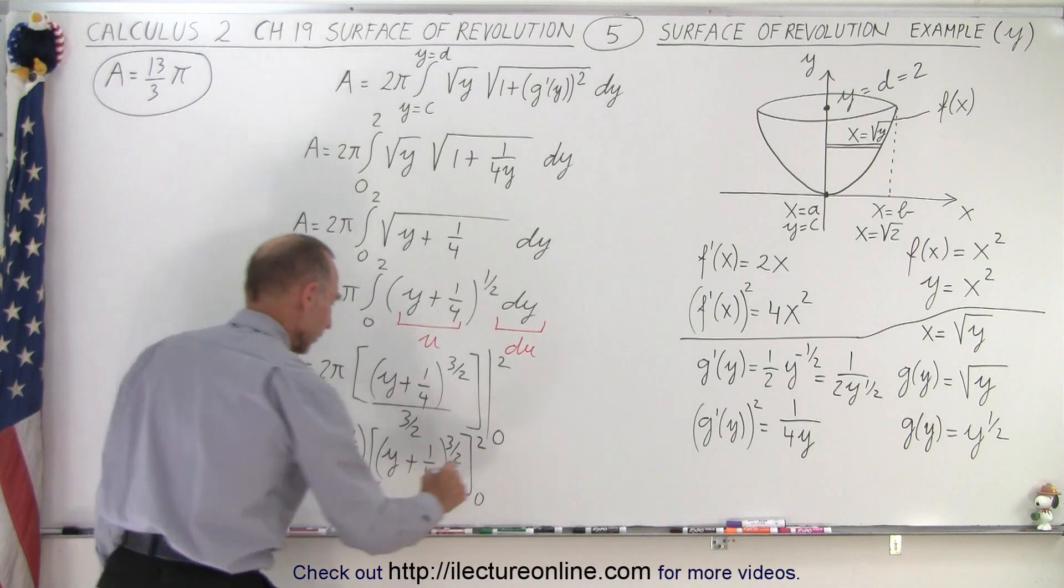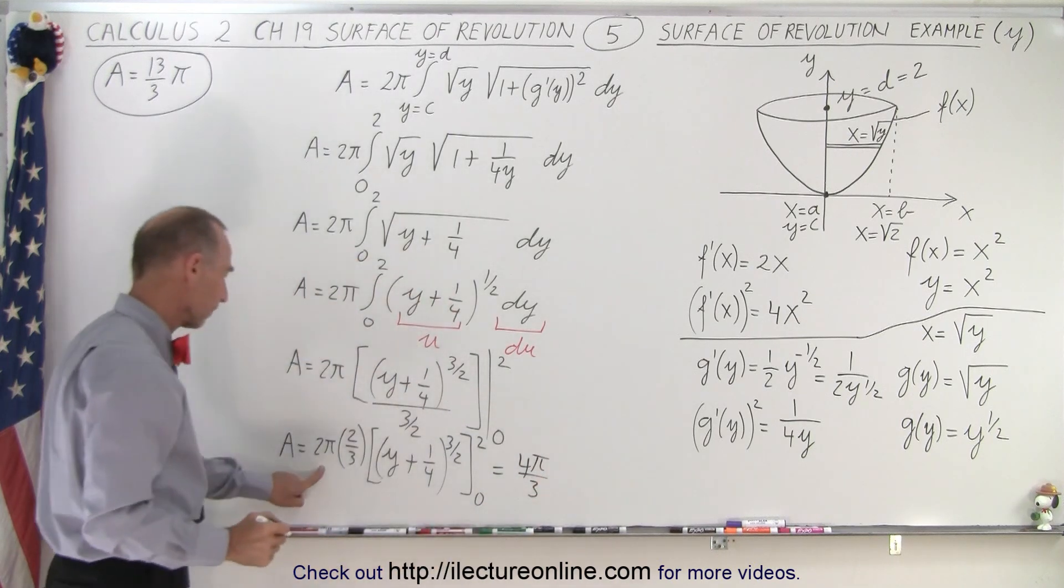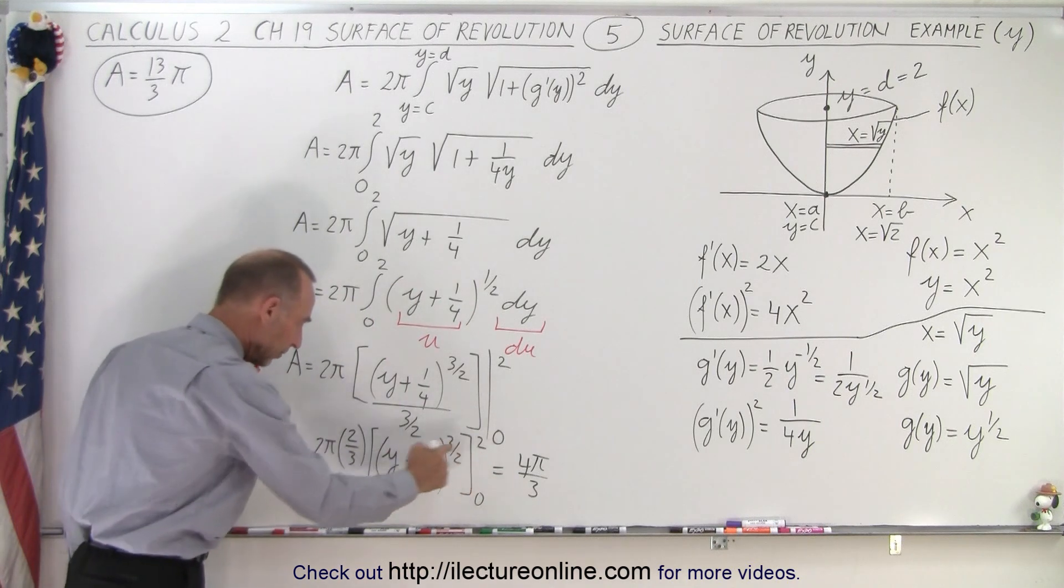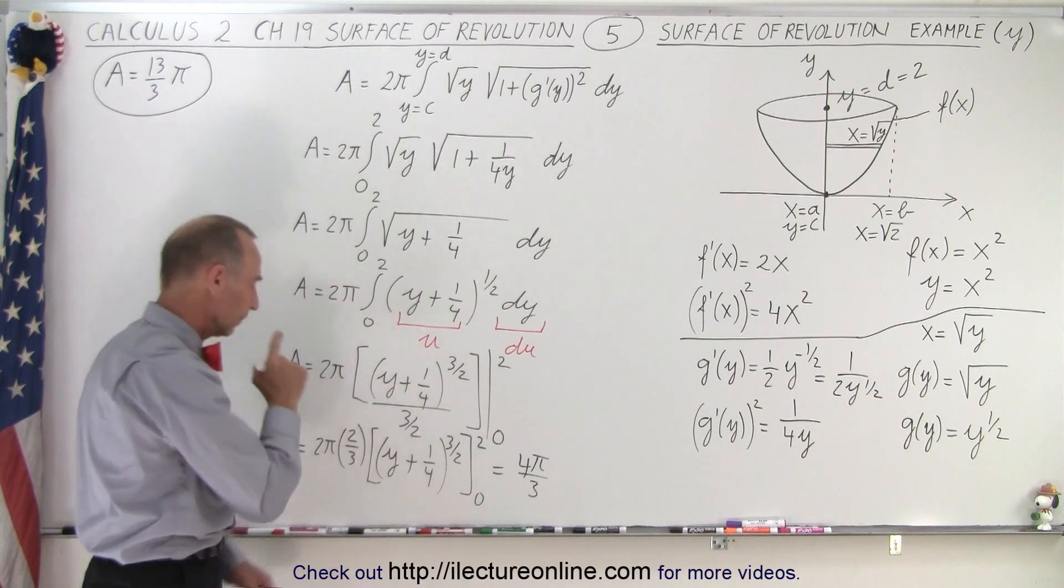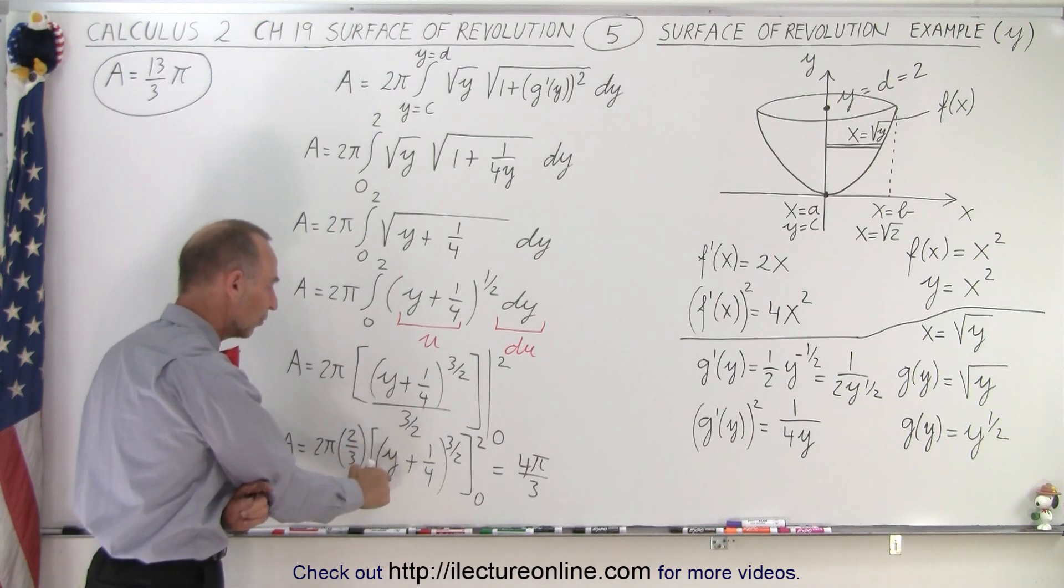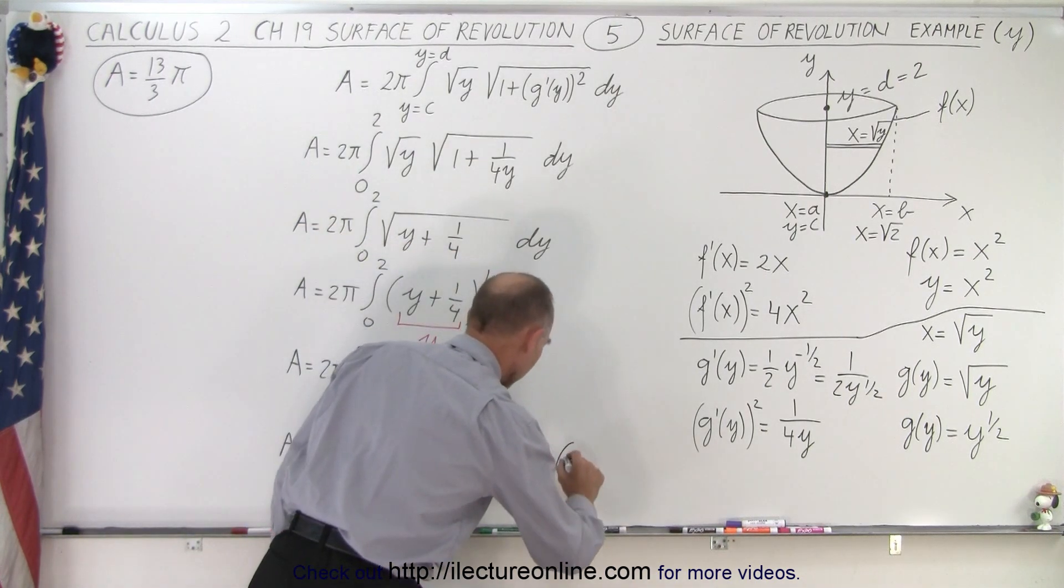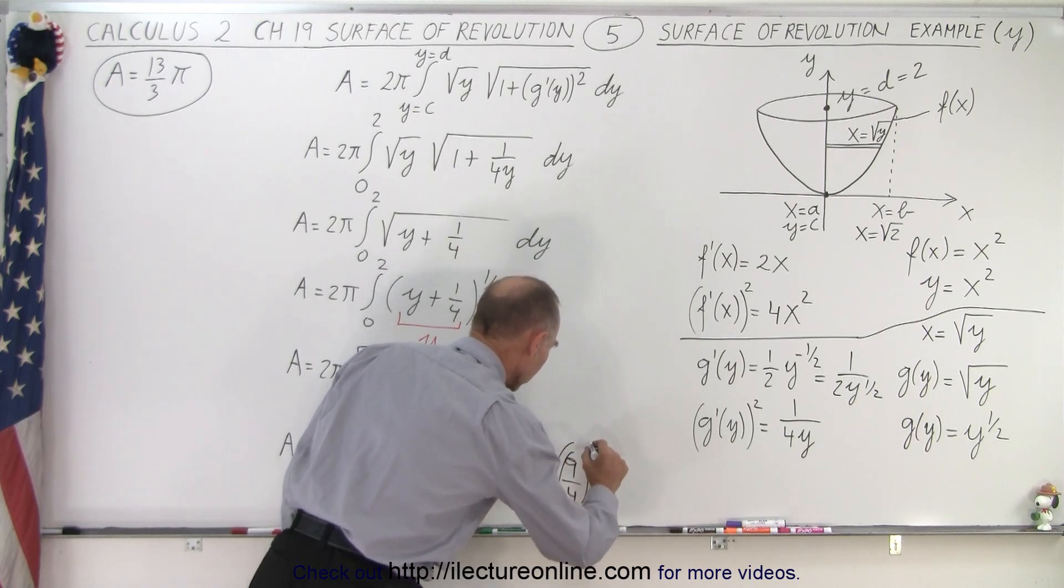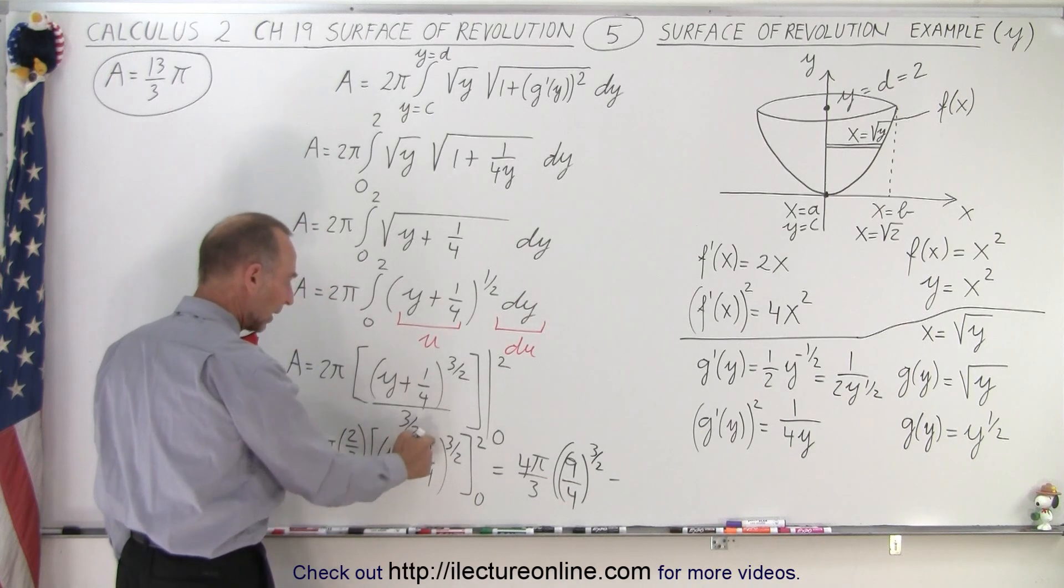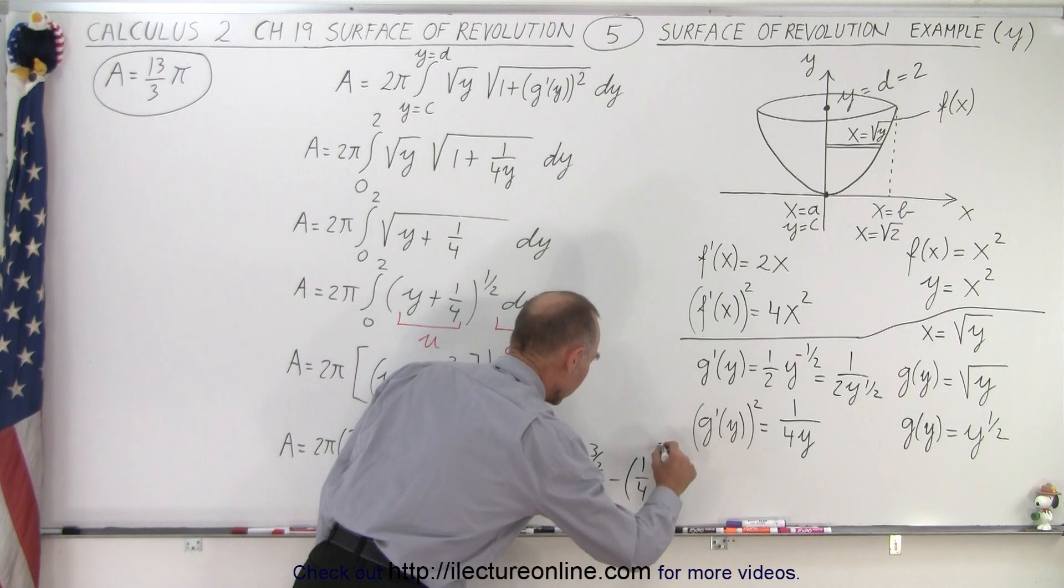Alright, so this becomes equal to 4 pi over 3, and then when I plug in the upper limit, I get 2 plus 1 quarter. So that gives me 9 over 4 to the 3 halves power, minus when I plug in the lower limit, I simply get 1 quarter, 1 quarter to the 3 halves power.